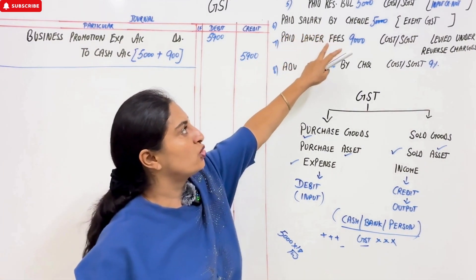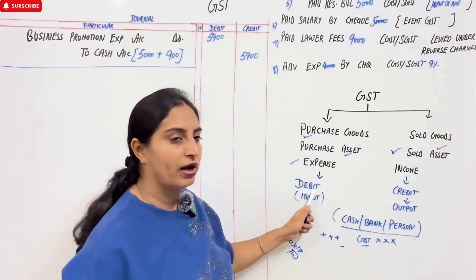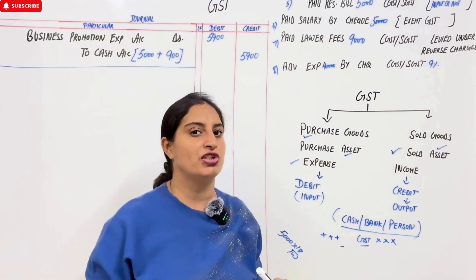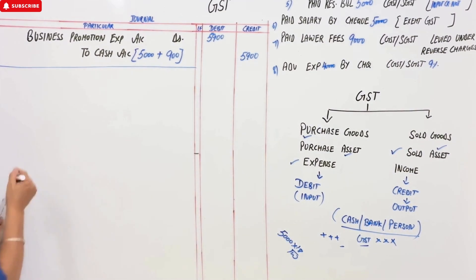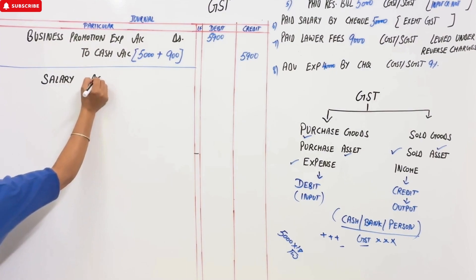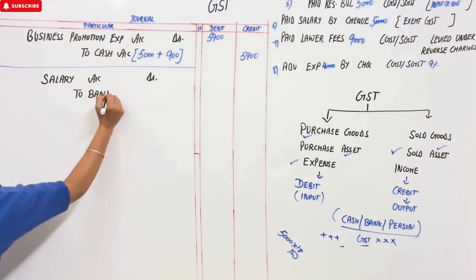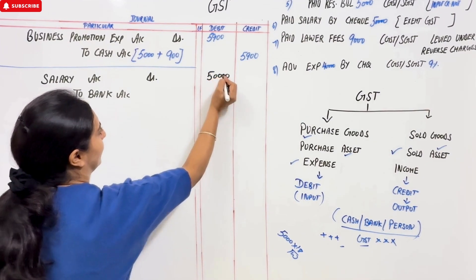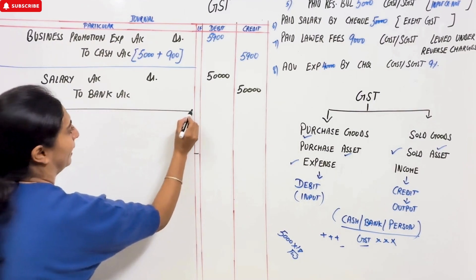Next: paid salaries to staff by cheque Rs. 50,000 — exempt from GST. Salaries are also an expense so they are debited, but since it is exempt, no GST is applied at all. Normal entry: Salary Account — Debit, To Bank Account. No GST entries required. Narration: salary paid by cheque.